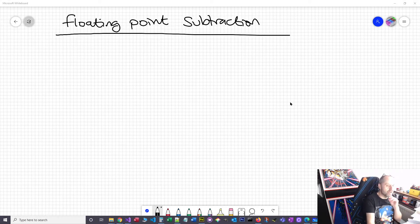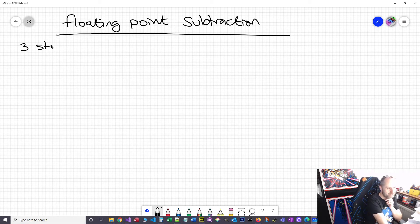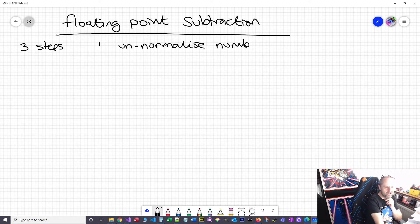Okay, so we've got three steps for floating-point subtraction. Number one: un-normalize your numbers.